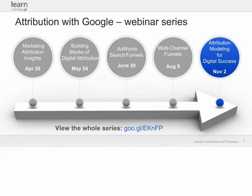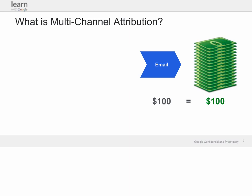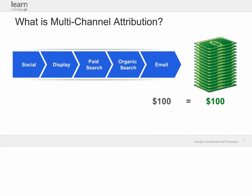We're just getting started. There's nothing more important to us at Google than our users, so the more feedback and comments you provide, the better we can tailor this product to your specific needs. For this particular webinar, we're going to cover what attribution modeling is — at a very high level — how you get started modeling with Google Analytics, what you can use today, and how you draw actionable insights from these tools. With multi-channel attribution, we're looking at what's happening along the conversion path. Whereas most customers simply look at what happened directly before conversion — what we'd call a last click — we now have visibility into the individual interactions that lead up to a conversion: the entire conversion path or conversion funnel.